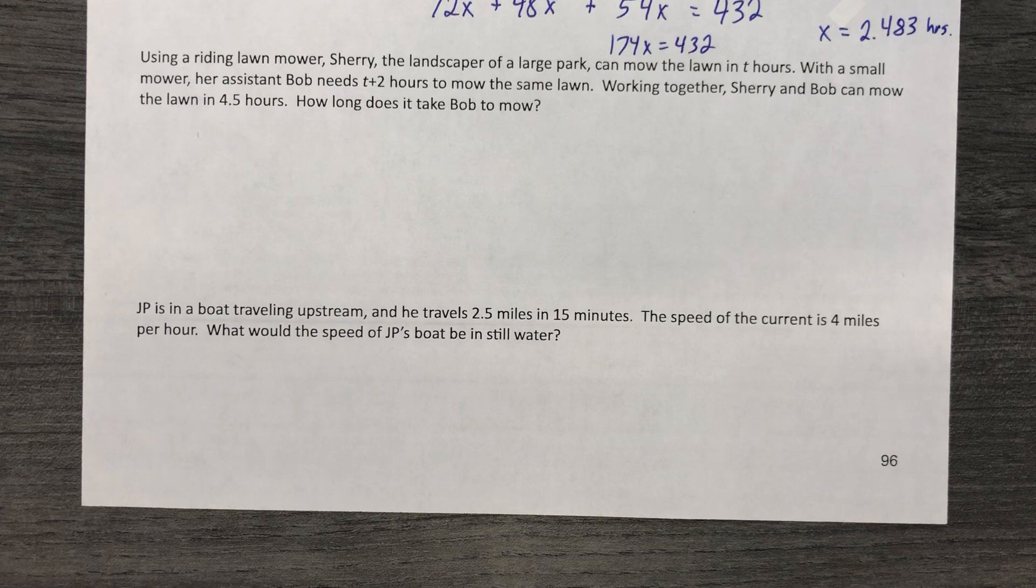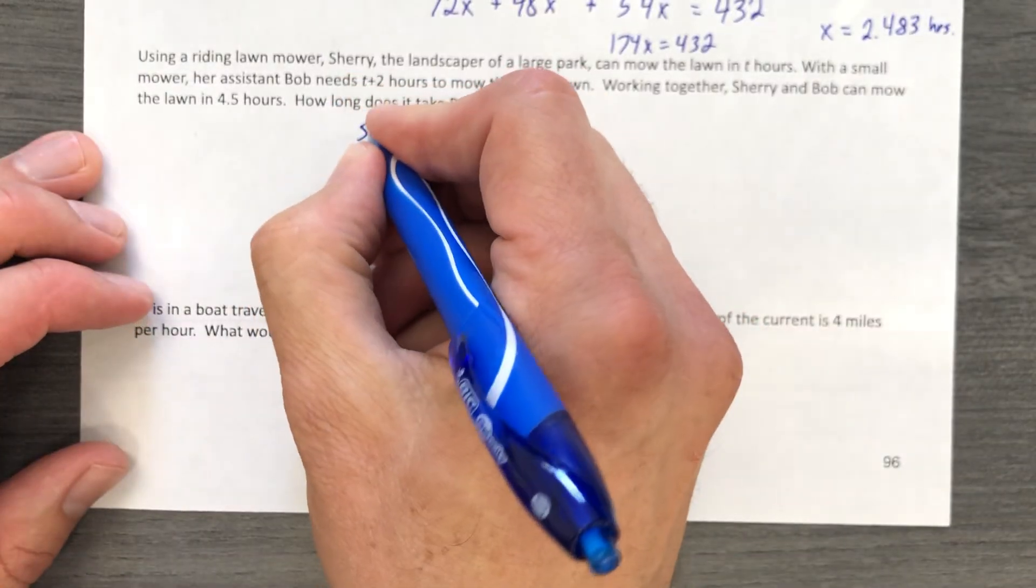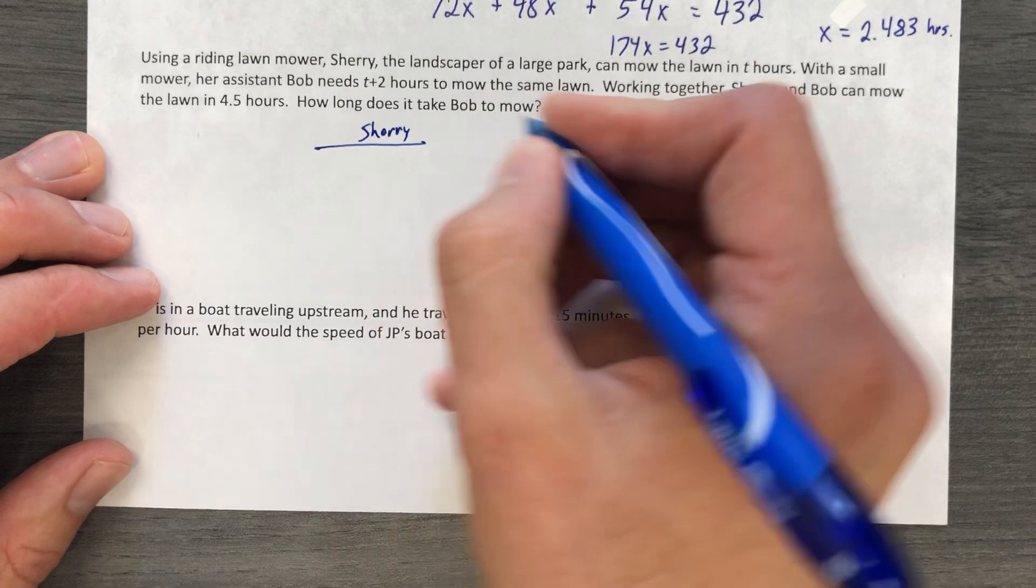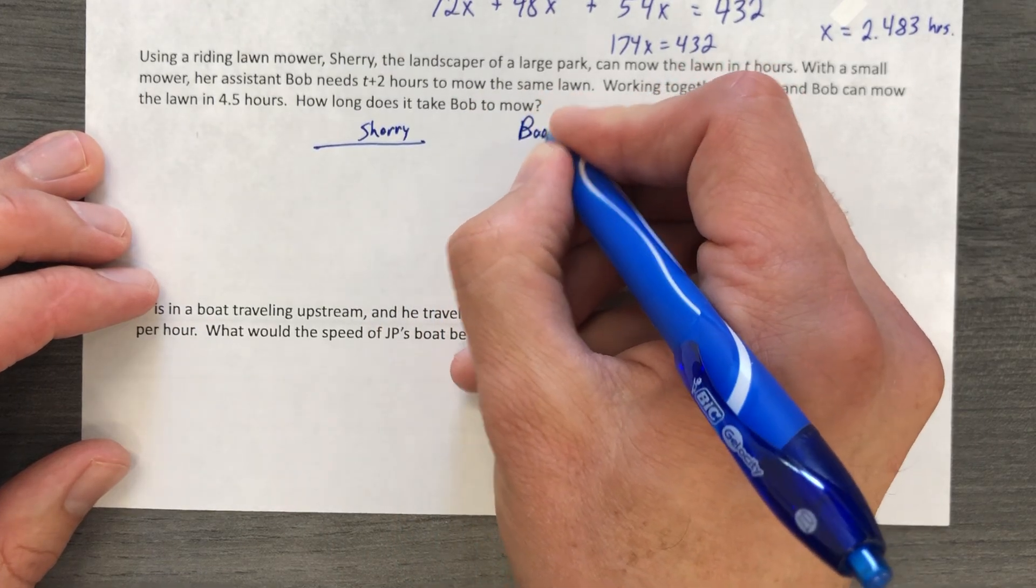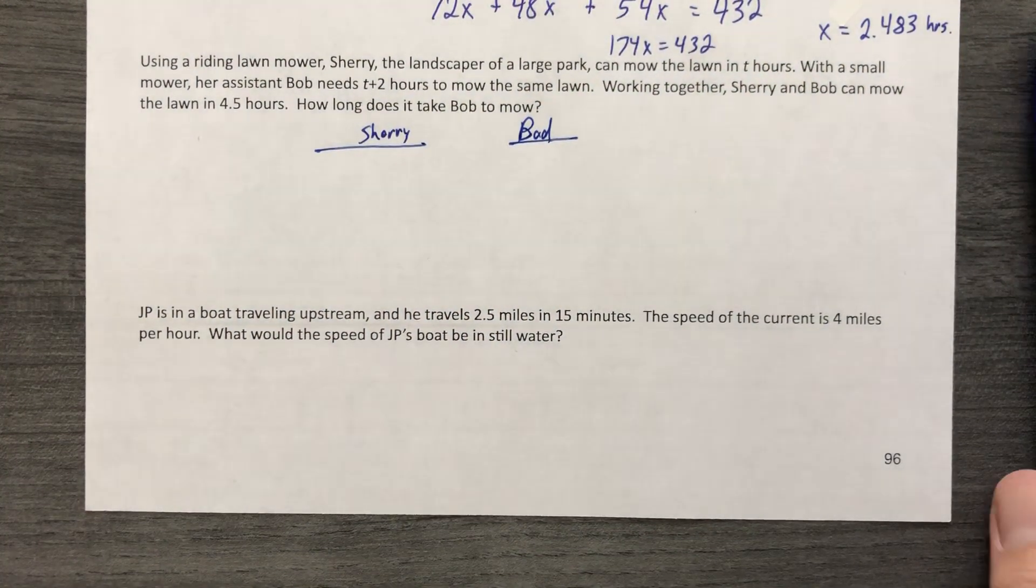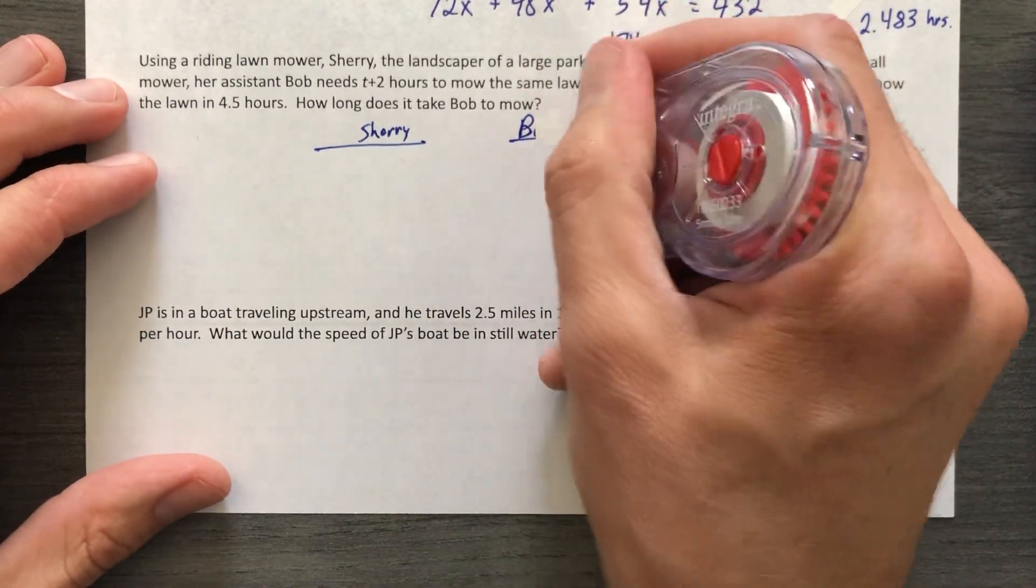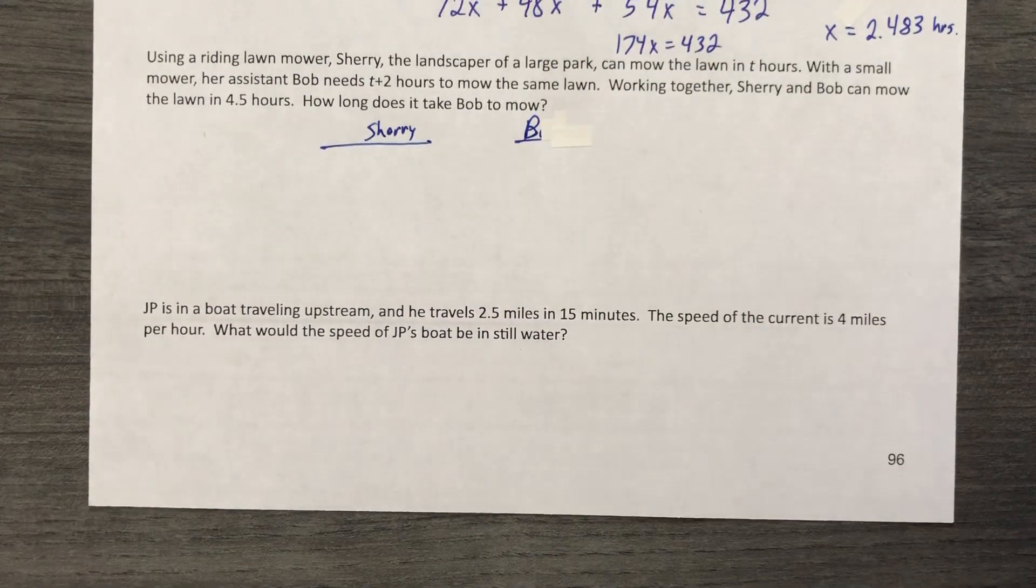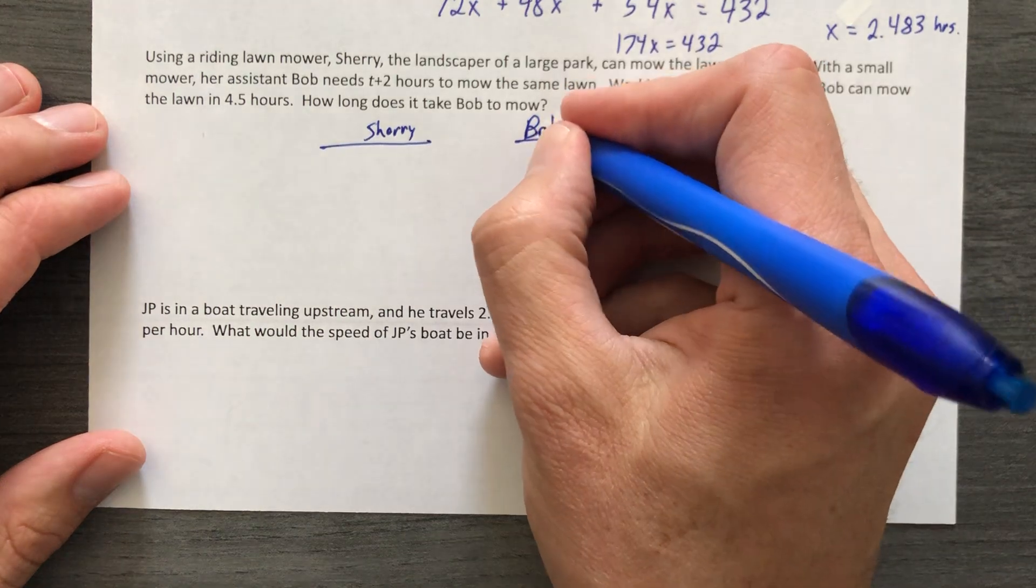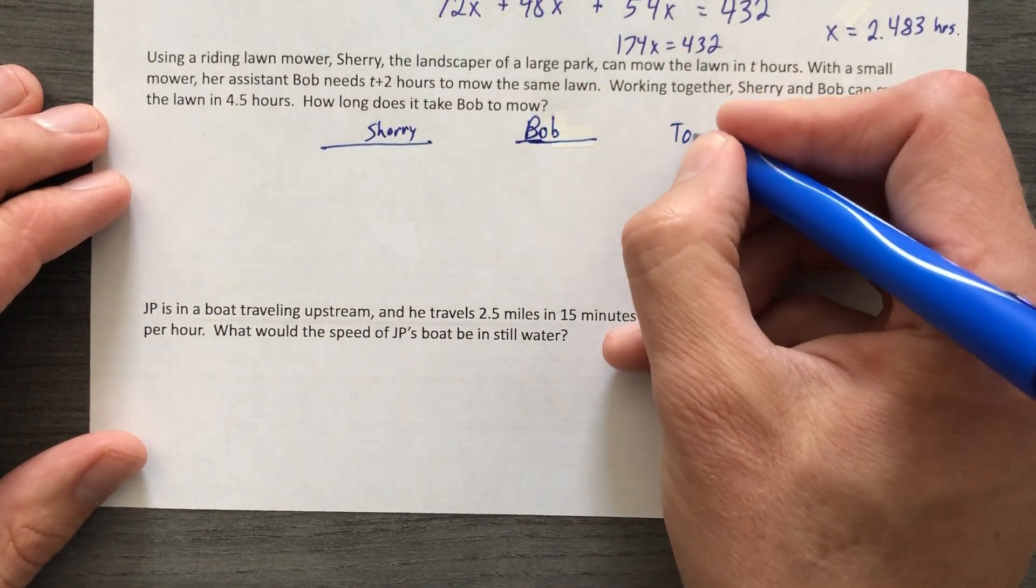So they have given you time, and we are mowing one lawn. Let's write this down. We have Sherry. We have Bob. I just wrote bad, and then the lights went out. So that's it, I'm going home now. Let's fix this. Bob.